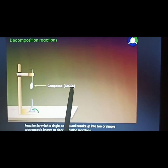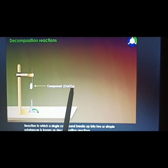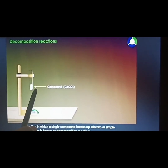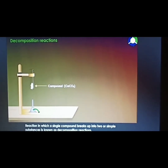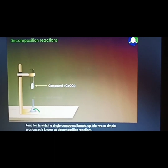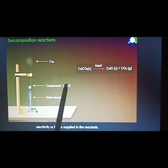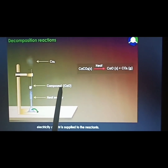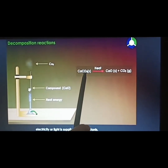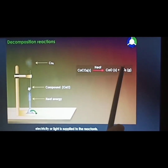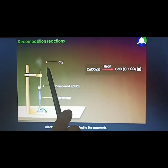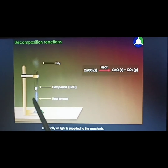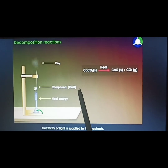Practically, calcium carbonate is kept in a test tube placed in a test tube stand. When this compound is heated, it will break into two simpler compounds. This complex compound decomposes into calcium oxide and carbon dioxide when heated. This type of decomposition reaction is known as thermal decomposition reaction.